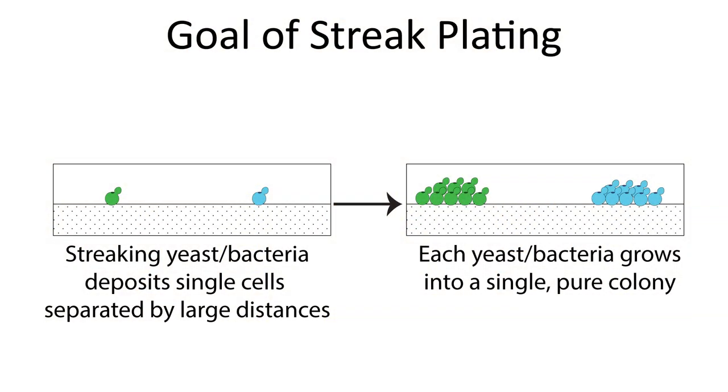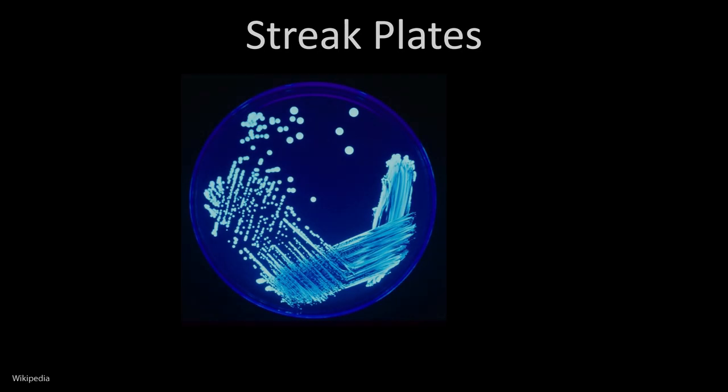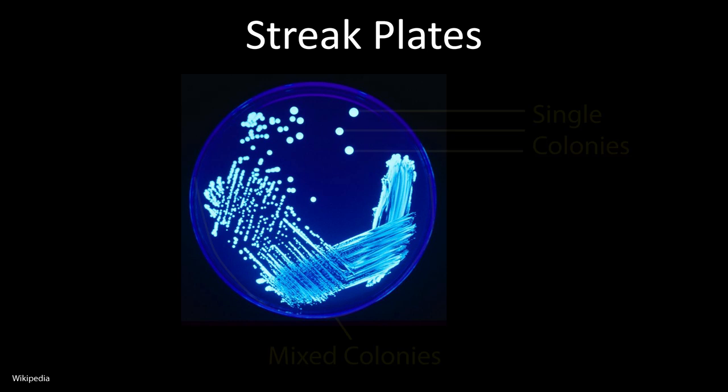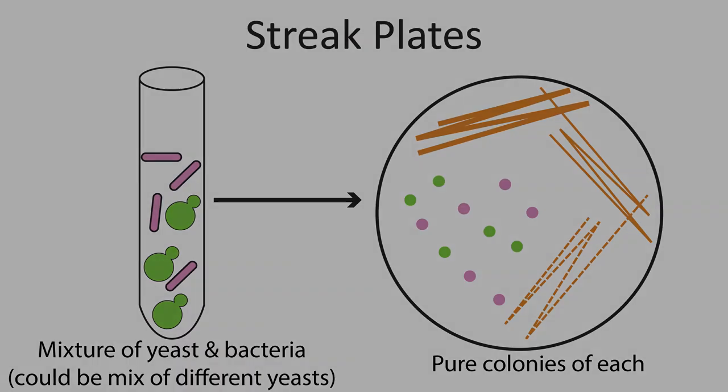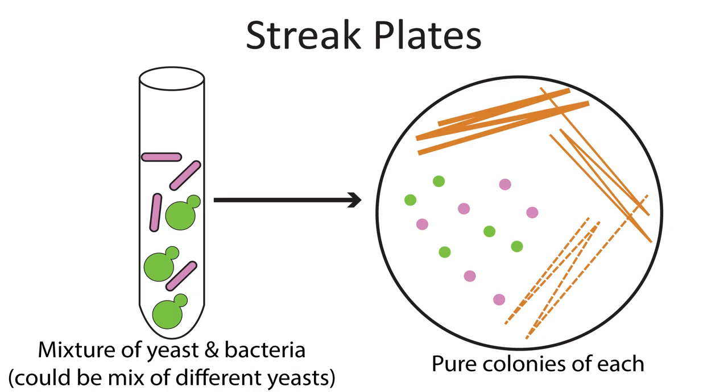The purpose of this is to take a dense culture of yeast or bacteria or whatever it is you're growing and spread them out so you get single individual colonies that you can then pick for future use. The reason why you might want to do this is if you're trying to purify a certain yeast or certain bacteria from maybe a sour beer. It's also a way that you can recover yeast from an infected batch of beer.